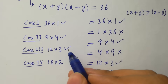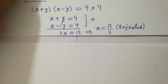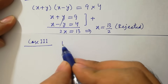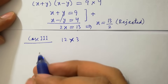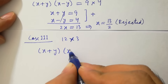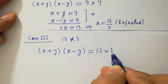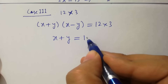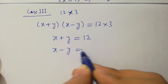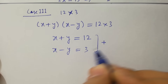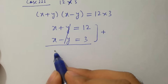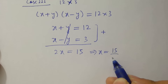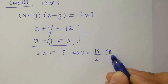Case 3: (x+y)(x-y) = 12×3. By comparison, x+y = 12 and x-y = 3. Adding them: 2x = 12+3 = 15, so x = 15/2, which is a fraction and not a natural number. This case is also rejected.